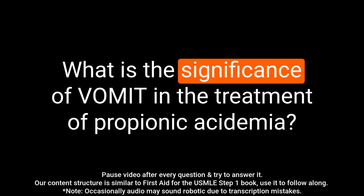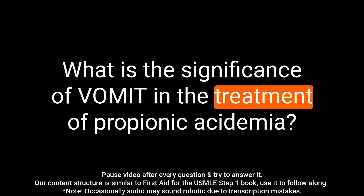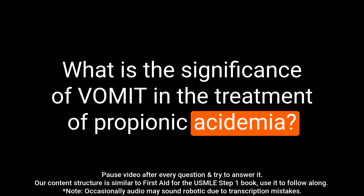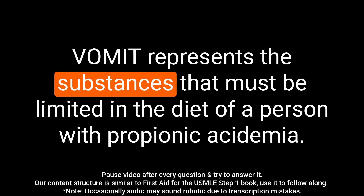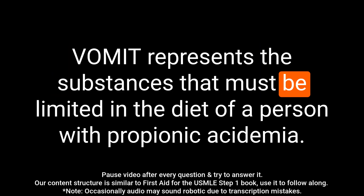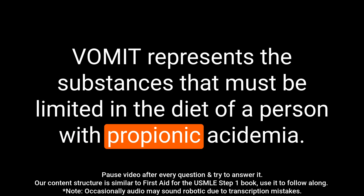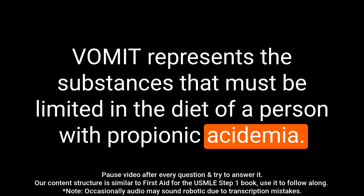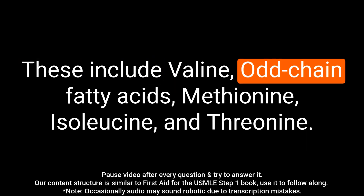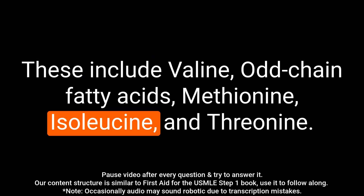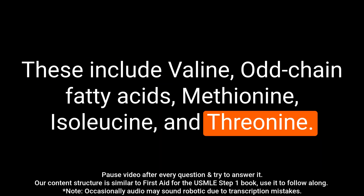Question: What is the significance of VOMIT in the treatment of propionic acidemia? Answer: VOMIT represents the substances that must be limited in the diet of a person with propionic acidemia. These include valine, odd-chain fatty acids, methionine, isoleucine, and threonine.